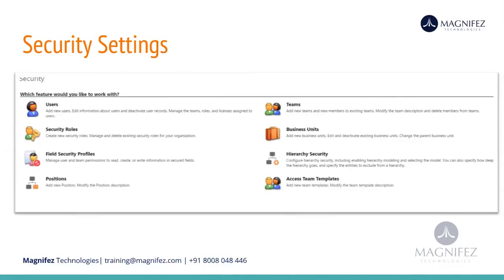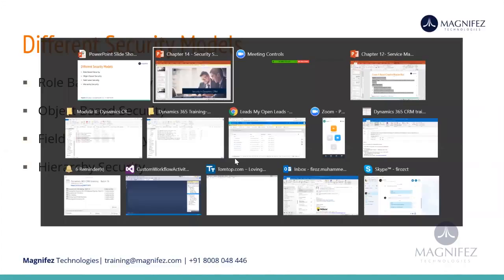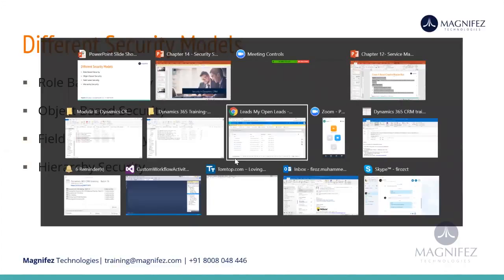So the first step in setting up your security structure is the business unit. You have to split your entire organization into different business units. What I mean by splitting is — when you create one Dynamics 365 org, you will get one organization. If I look at my Dynamics 365 organization...